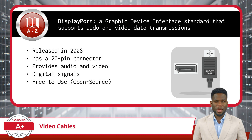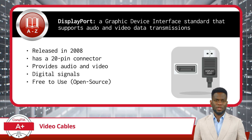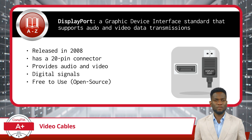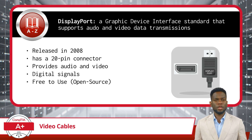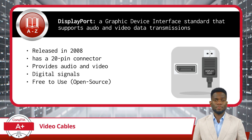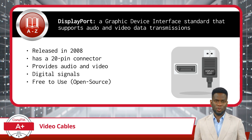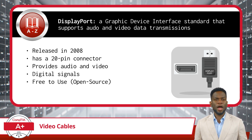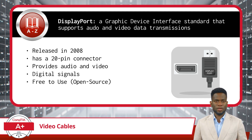I have saved the best for last — well, that is merely an opinion and certainly debatable. A few years after the release of HDMI, in 2008, we were given the DisplayPort Graphic Device Interface Standard. Since 2008, DisplayPort and HDMI have been battling it out for top spot. DisplayPort comes with a 20-pin connector, provides audio and video data streaming, and uses a digital signal — sounds a lot like HDMI. The key differences are that the DisplayPort standard is free-to-use, or open-source, while HDMI charges manufacturers a small fee per device for its use. Also, DisplayPort has a higher throughput speed for now, as updates to these standards are always in the works.